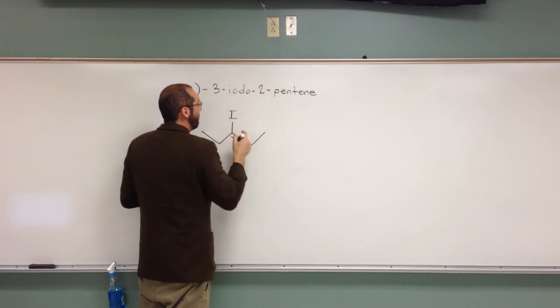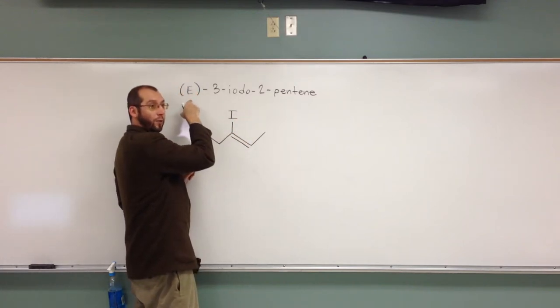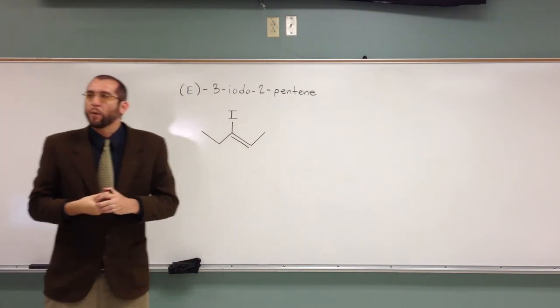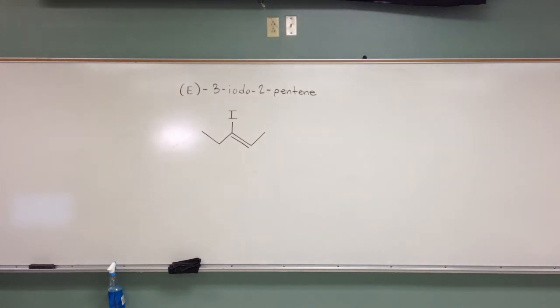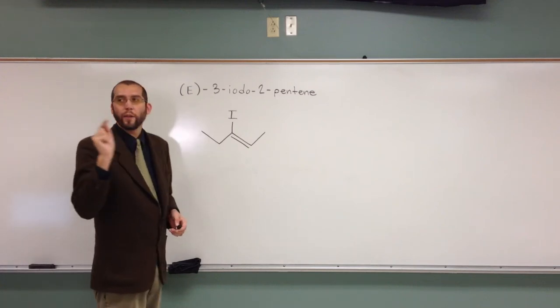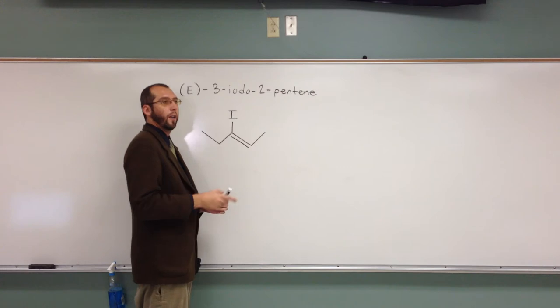And we're just drawing this for right now, and then we're going to come over here and check whether we've got this right, this E right, okay? So E, what does that mean? Does it mean they're on the same side or on the opposite side? Opposite. Opposite sides, okay? The two big groups are on the opposite sides around the double bond.